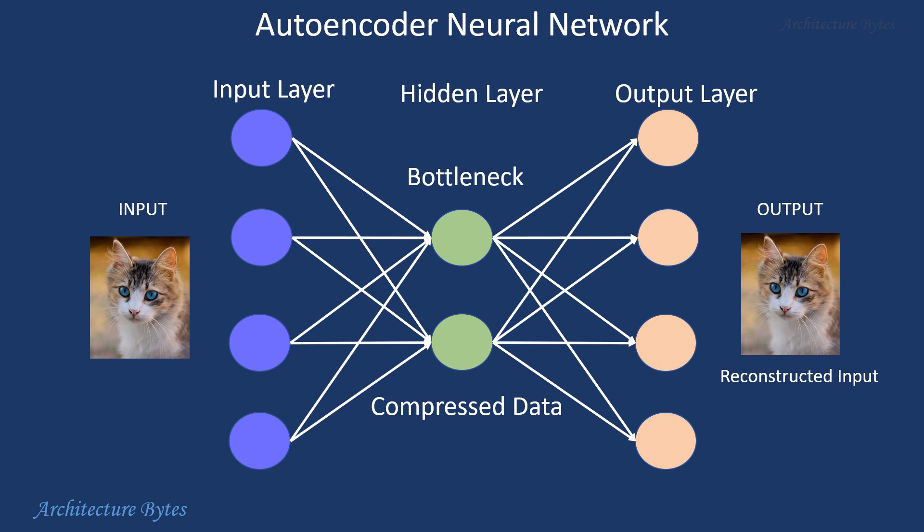Autoencoders are used for unsupervised learning and feature extraction. They are made up of an encoder that maps input data to a lower dimensional latent space and a decoder that reconstructs the original data from the latent representation. So autoencoders are very useful because they do not require label data for training. They learn by trying to reconstruct the input data itself. Autoencoders are used in denoising, anomaly detection and dimensionality reduction.